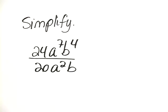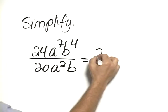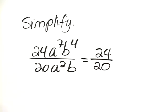To simplify this, we would take and divide the constants separately, so that's 24 divided by 20.